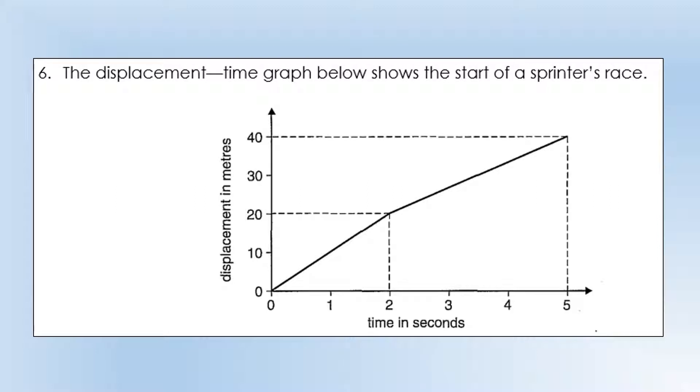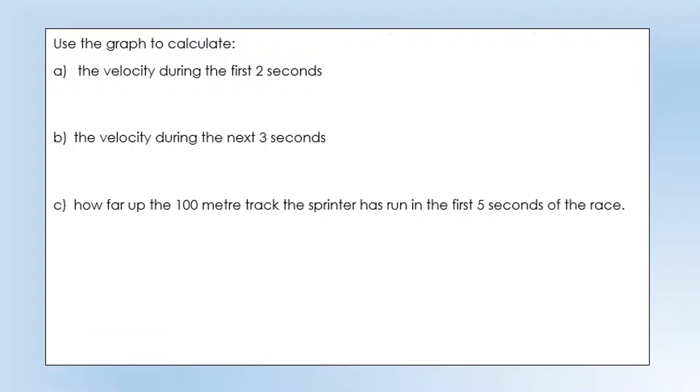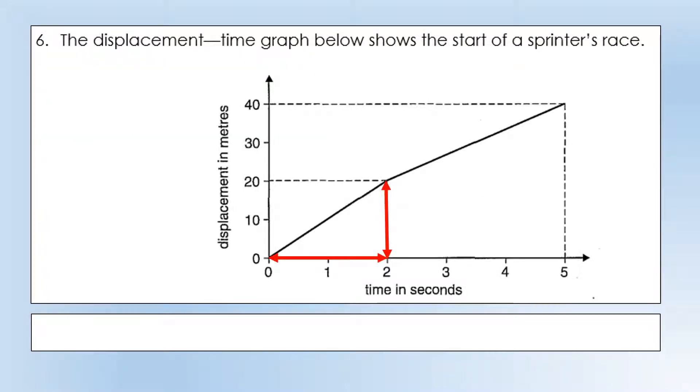A displacement time graph of a sprinter. What we've got is initially it traveling at a constant speed, and then it travels at a lower constant speed later on, shown by a shallower gradient. Use the graph to calculate the velocity during the first two seconds. Velocity is the gradient, so we're going to do change in displacement over change in time, and that gives us our velocity.